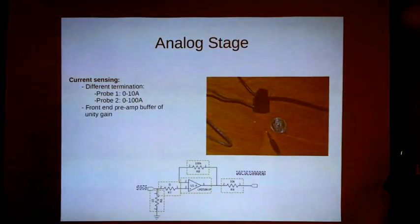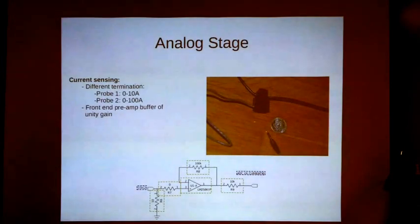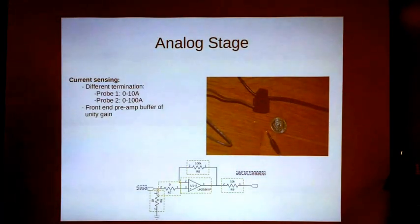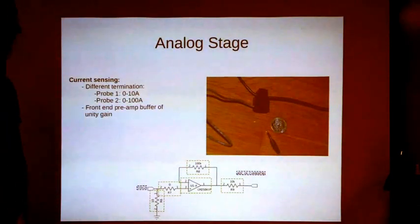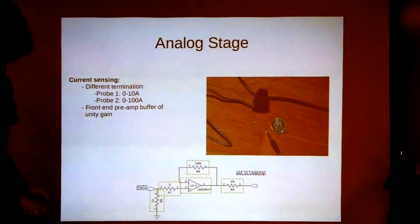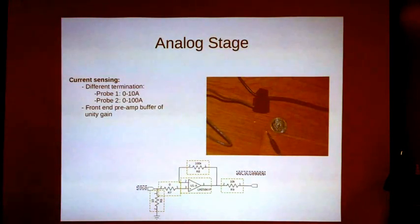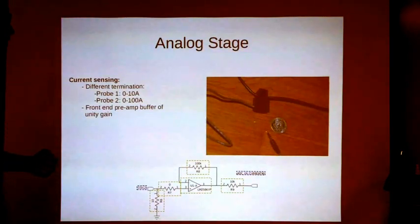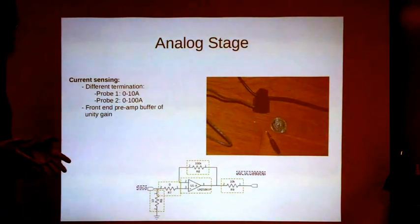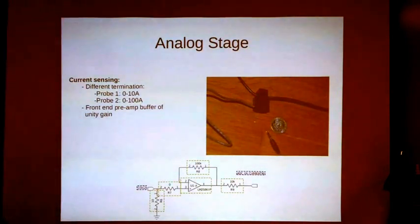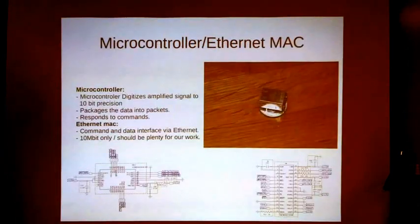So the analog stage, we have two different probes, and we decided to terminate them differently. So one probe is good from 0 to 10 amps, which is something you would see in a household circuit. The other probe is good for 0 to 100 amps, which is more of like monitoring a house or heavy equipment. We have a preamp buffer of unity gain, so it doesn't amplify anything, but it purely just buffers that input for our ADC to readout.